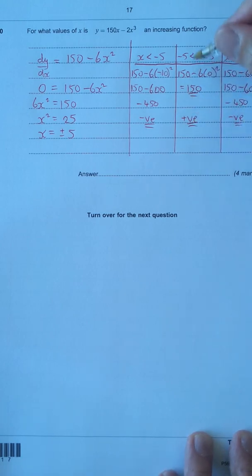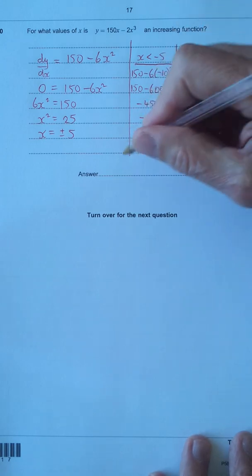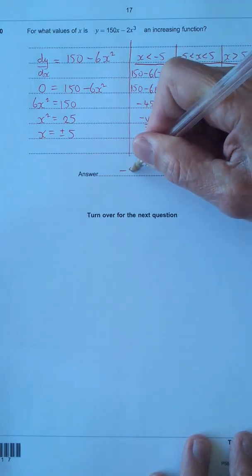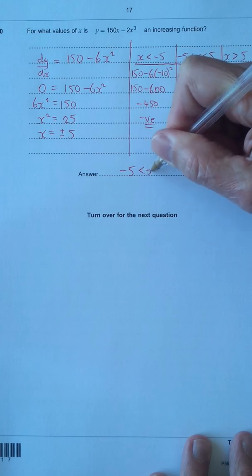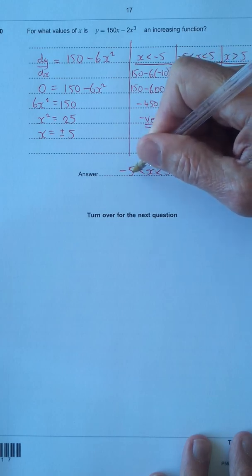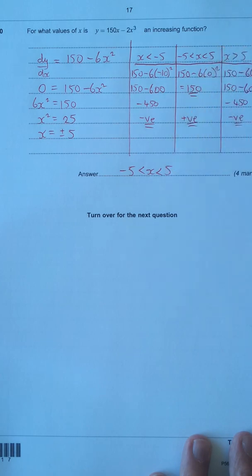So that means this part here is where it's positive, so this is where the function is increasing. So that's the answer, minus 5 < x < 5. So x is greater than negative 5 and less than 5.